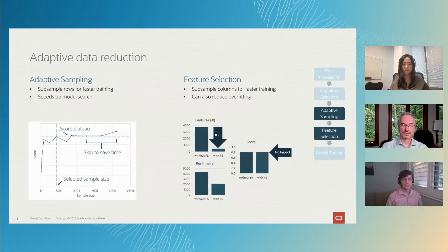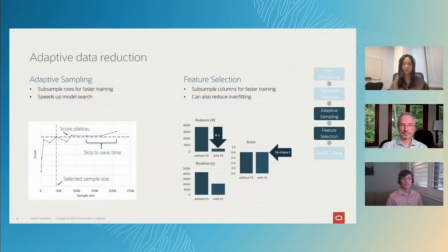We simply start off with a small dataset and then keep increasing the dataset size using a larger and larger sample, until we observe that the performance is not improving with your model. Once we've done that, we know we've got a good amount of data.